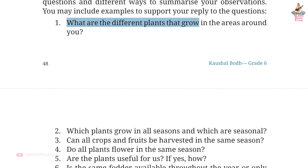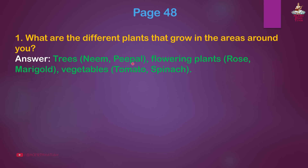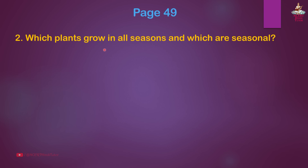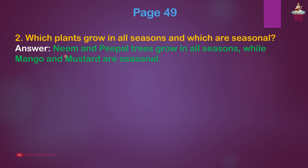Page 48, Question 1: What are the different plants that grow in the areas around you? Answer: Trees — Neem, Peepal; flowering plants — Rose, Marigold; vegetables — Tomatoes, Spinach. Question 2: Which plants grow in all seasons and which are seasonal? Answer: Neem and Peepal trees grow in all seasons, while mango and mustard are seasonal.